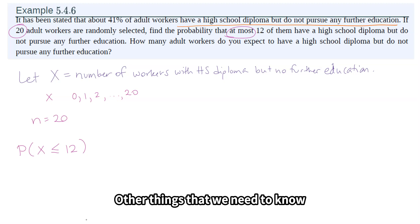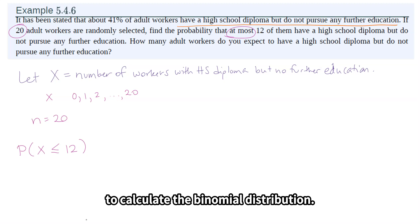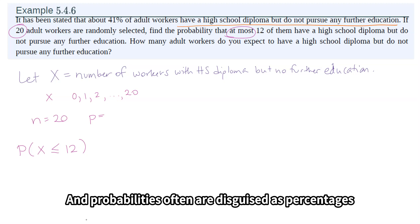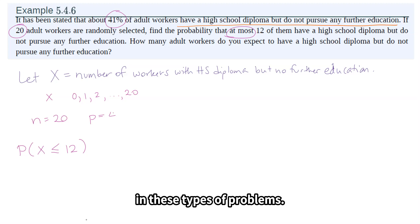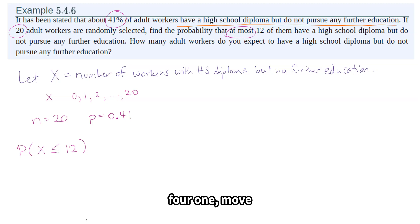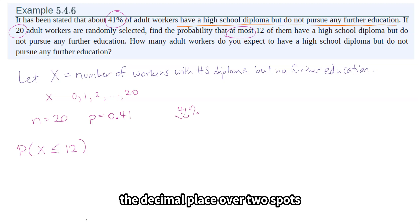Other things we need to know before we can start using anything to calculate the binomial distribution: we need to know the probability of success. Probabilities are often disguised as percentages in these types of problems. So we're going to take that 41% and change it to a decimal, 0.41 — move the decimal place over two spots.